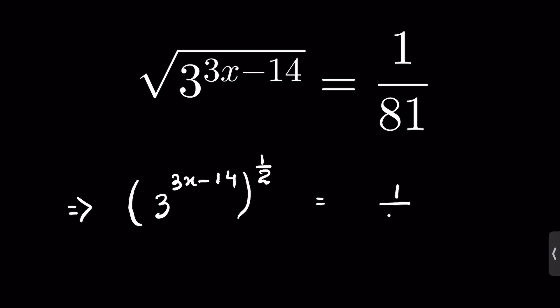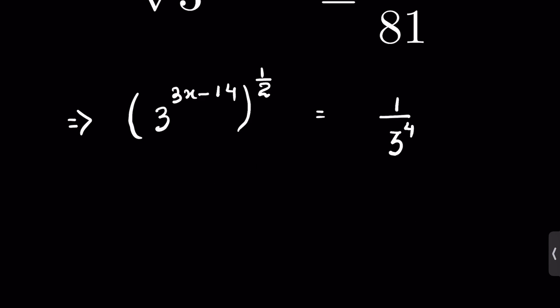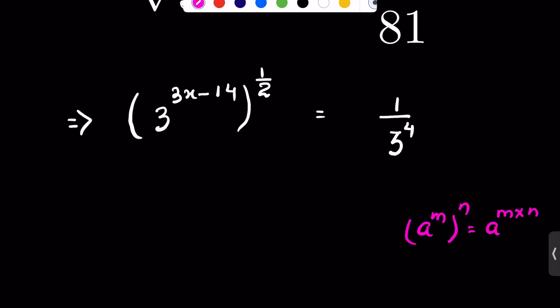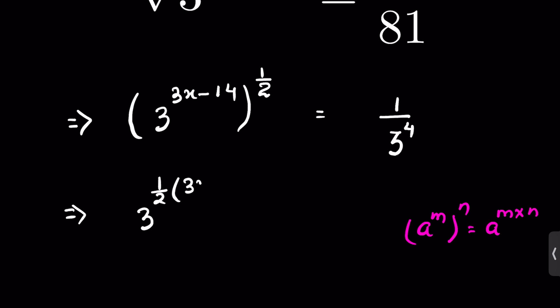So 1 upon 3 raised to the power 4. Now there is an identity: if a raised to the power m, whole raised to the power n, then this is equal to a raised to the power m times n. So we can write 3 raised to the power 1/2 times (3x minus 14) is equal to 1 upon 3 raised to the power 4.